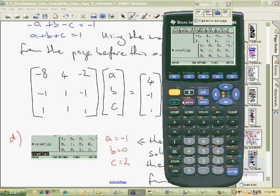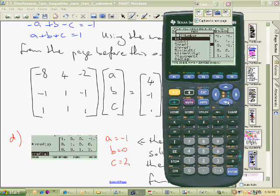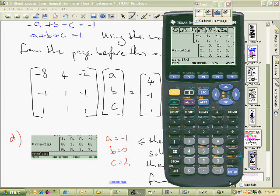To find the simult function we go second function and here's maths, and then we go down to matrix and then across and then we go down. So there's the RF one we've already used. Now the simult function, enter.